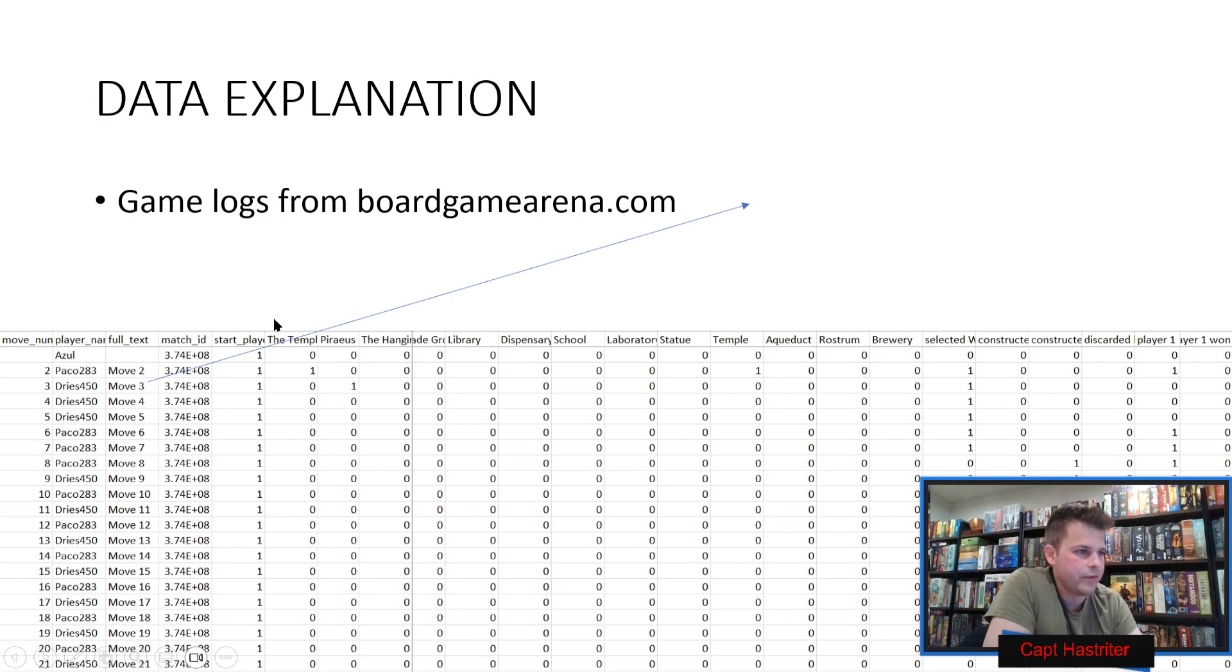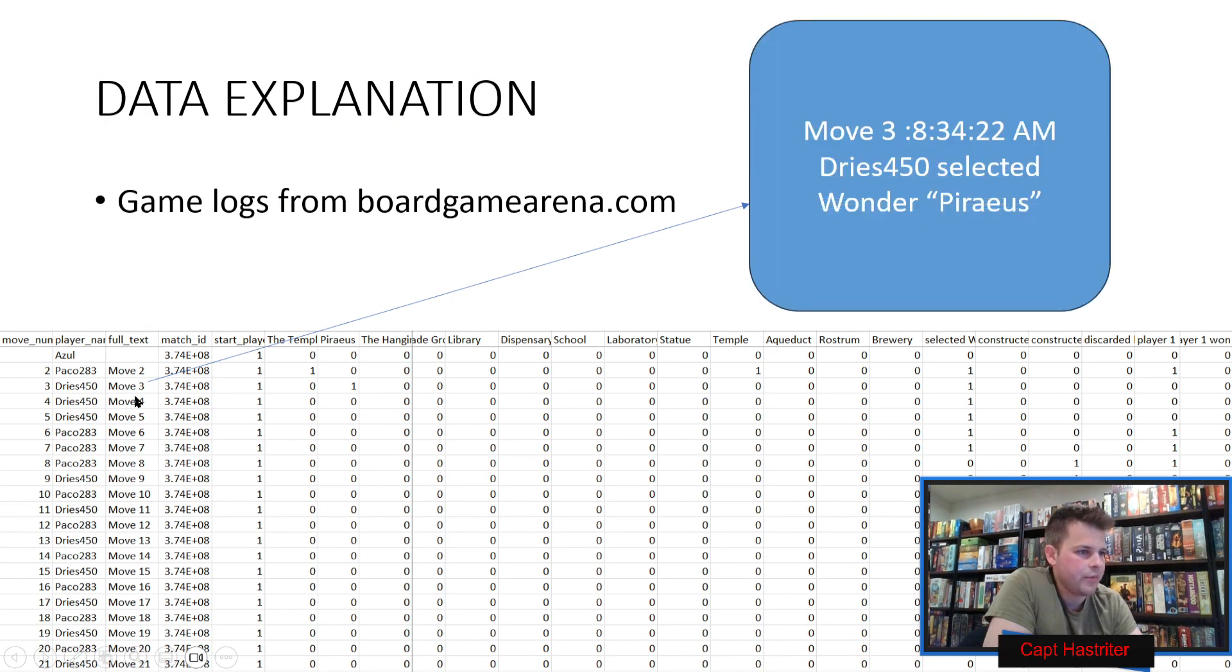Every row is a move. Every column is a feature. It grabs features because of the full text of each move. Move three, the second player selected Wonder Piraeus. Piraeus gets a one because it occurred in the move. Selected Wonder gets a one. Player one gets a zero.